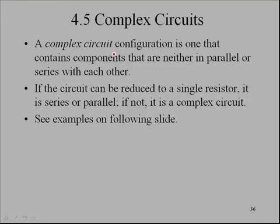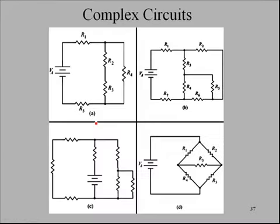A complex circuit configuration is one that contains components that are neither in parallel nor series with each other. If the circuit can be reduced to a single resistor, it is a series or parallel. If not, it is a complex circuit. And so let's look at some examples on the following slide.